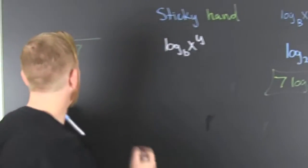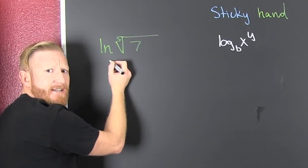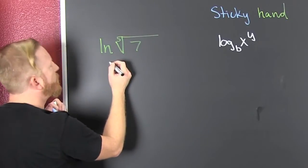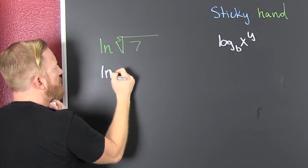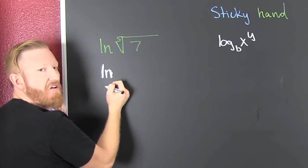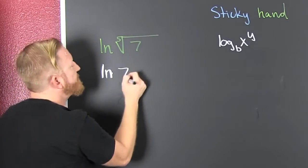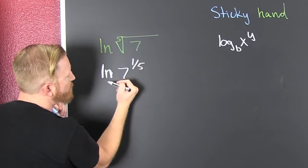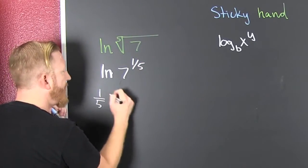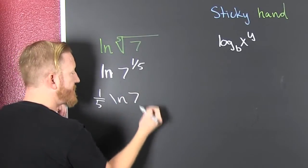This one you're like, that's not in the form, but we can make it in the form if we see that that's the natural log of 7 to the rational exponent one fifth. Then we can use sticky hand. One fifth natural log of 7.